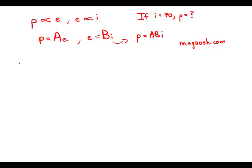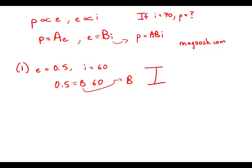So statement number one tells us that when E equals 0.5, I equals 60. So this allows us to relate E and I, and this would allow us to solve for B. Now, if we solve for B, we wouldn't necessarily be able to go directly from I to P because we don't know anything about A. So while this is useful, this in and of itself is not sufficient. So statement number one, insufficient.